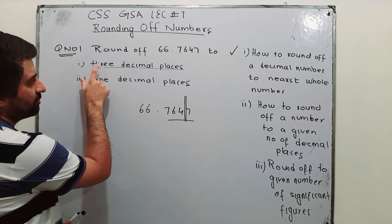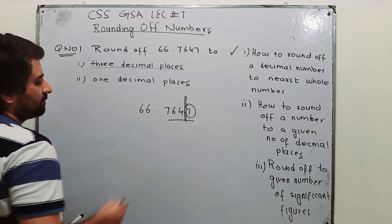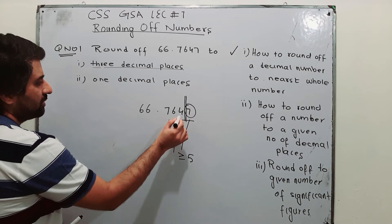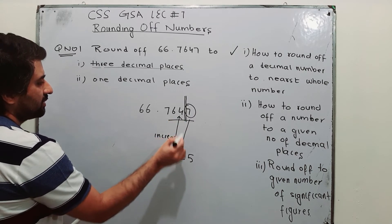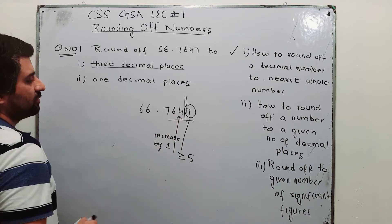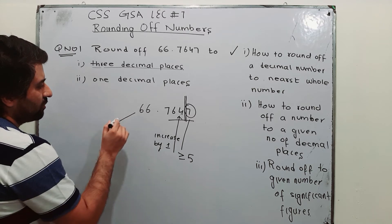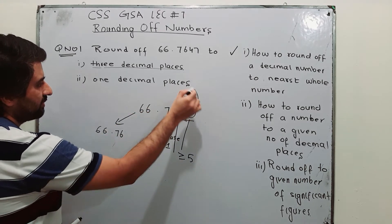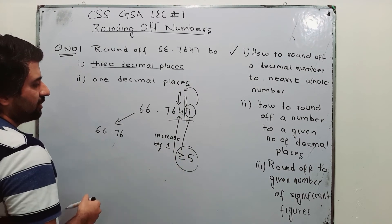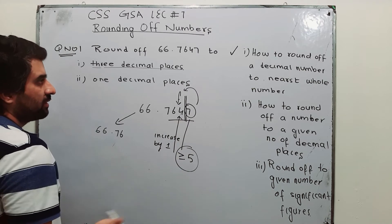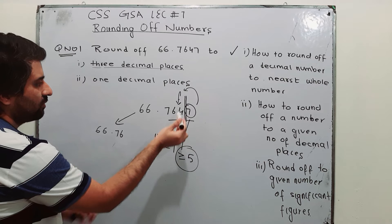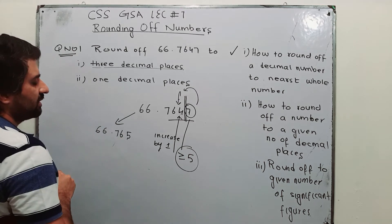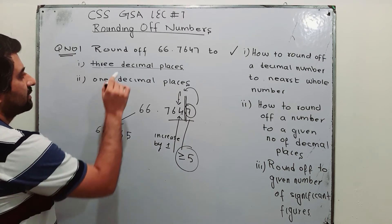Because we have to restrict it to 3 decimals, the 4th digit is to be dropped. If this following digit is greater than or equal to 5, you increase the previous digit by 1 — the same rule as before. So you write 66.764 and since the following digit is 7, which is greater than 5, you increase the 4 by 1. The answer becomes 66.765. This is the answer up to 3 decimal places.